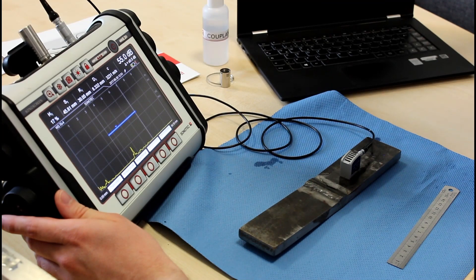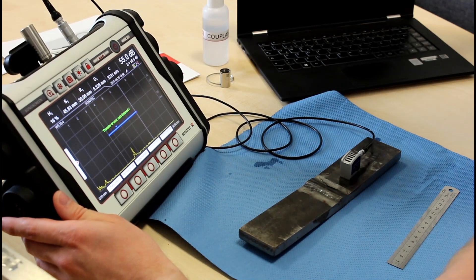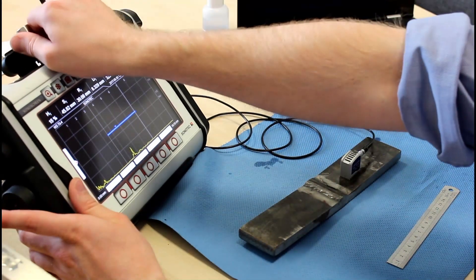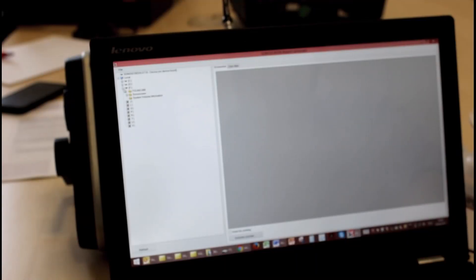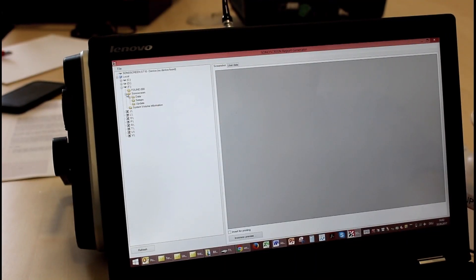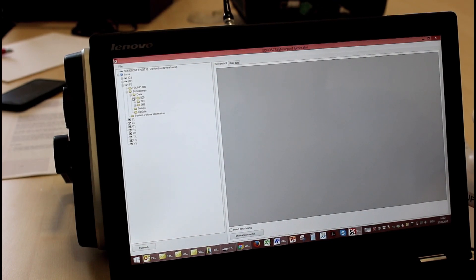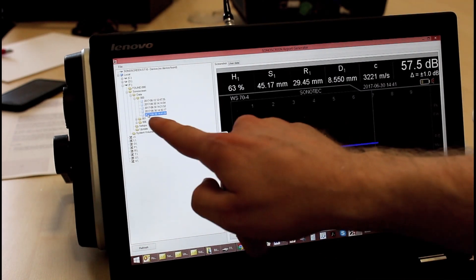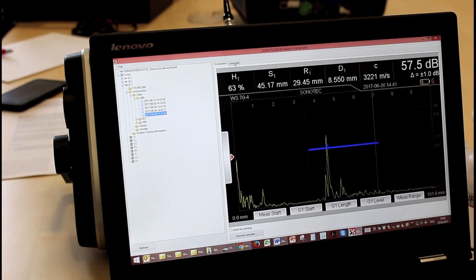I am going to connect it to the computer. Now we can open the report generator software. And the first thing we need to do is source our file. So we are going to source the flash drive. On the flash drive you have a folder called Sonoscreen. Data. And by the date and time you can find your setup and screenshot.